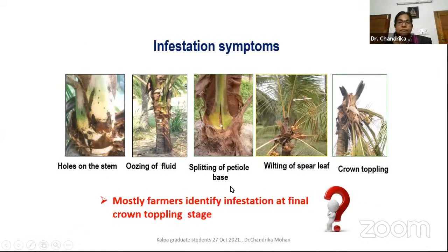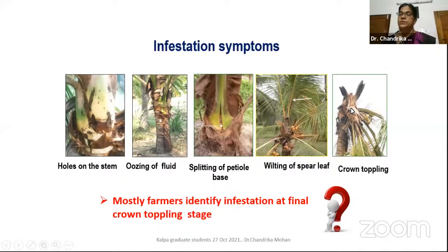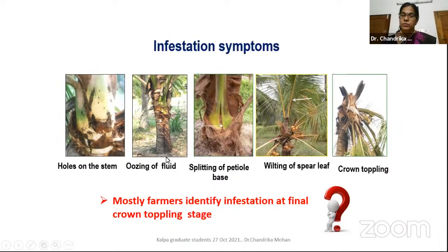How can we identify whether a palm is infested with red palm weevil? Mostly farmers identify infestation at the final stage — the crown toppling stage — when nothing can be done. Symptoms include holes on the stem with some kind of brown fluid coming out, splitting of the petiole base, or wilting of the central shoot. These are the symptoms of red palm weevil infestation. If we notice any of these symptoms, we must immediately go for curative treatment.